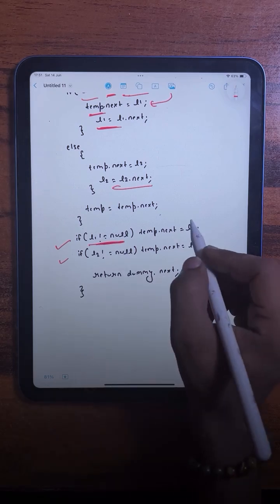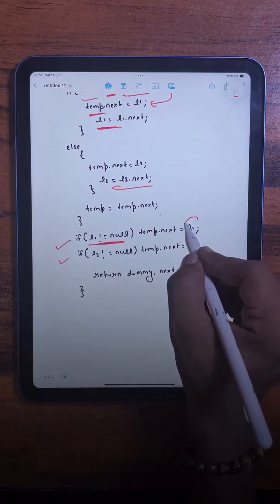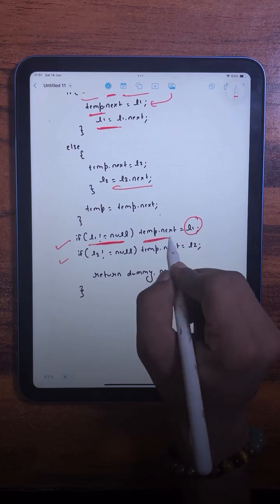then in that case we are attaching all the remaining elements of that list to the resultant list, like this.